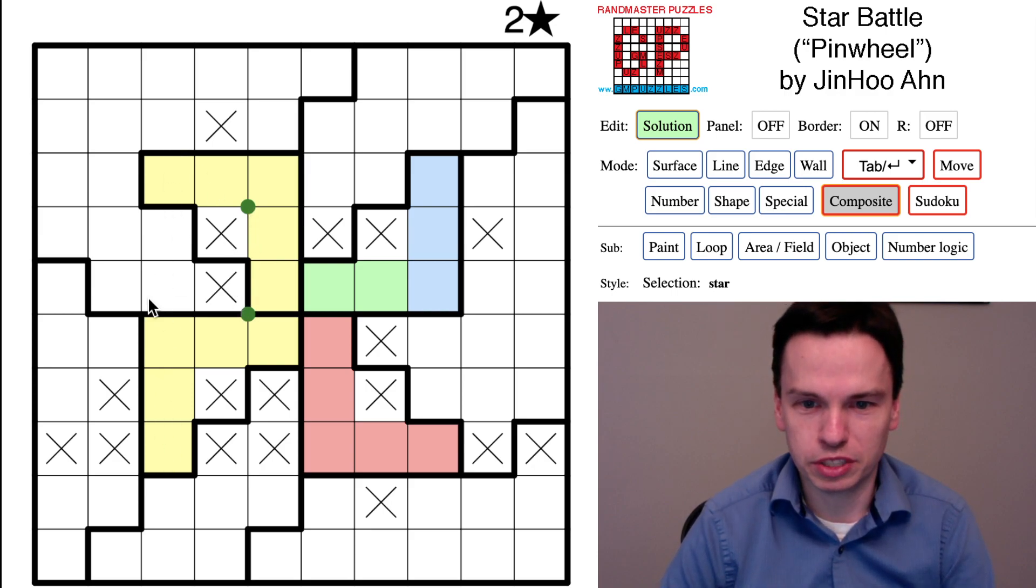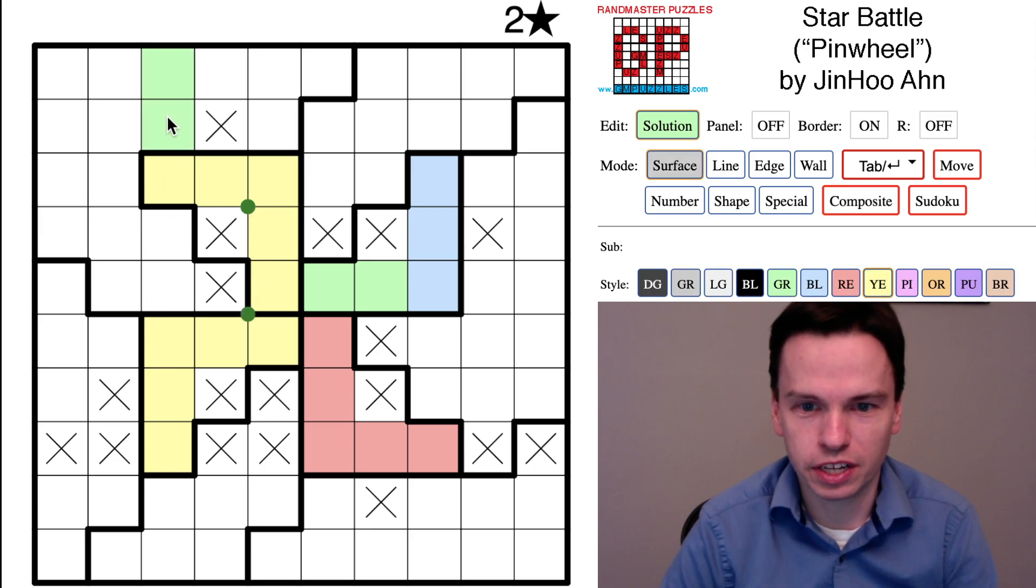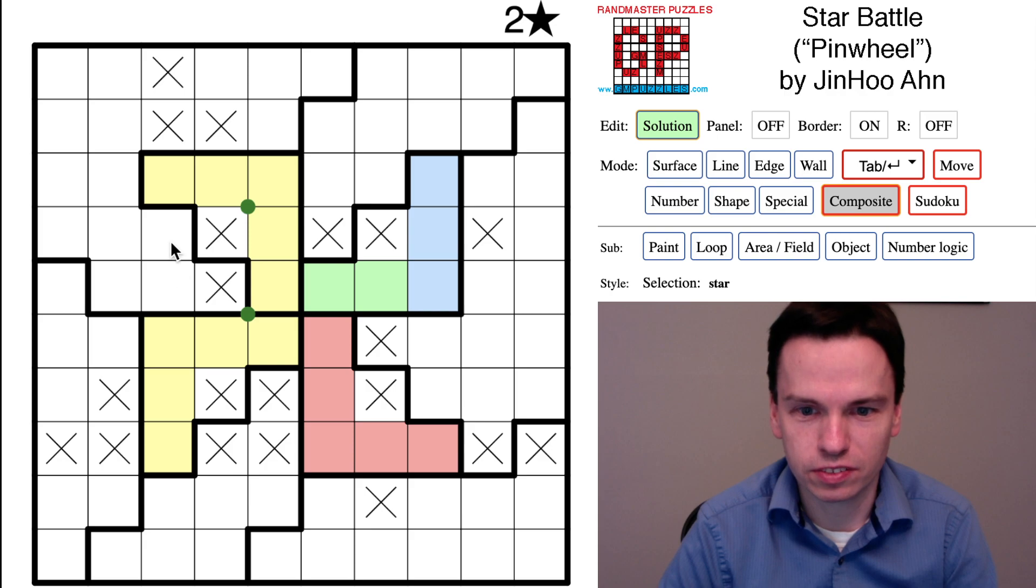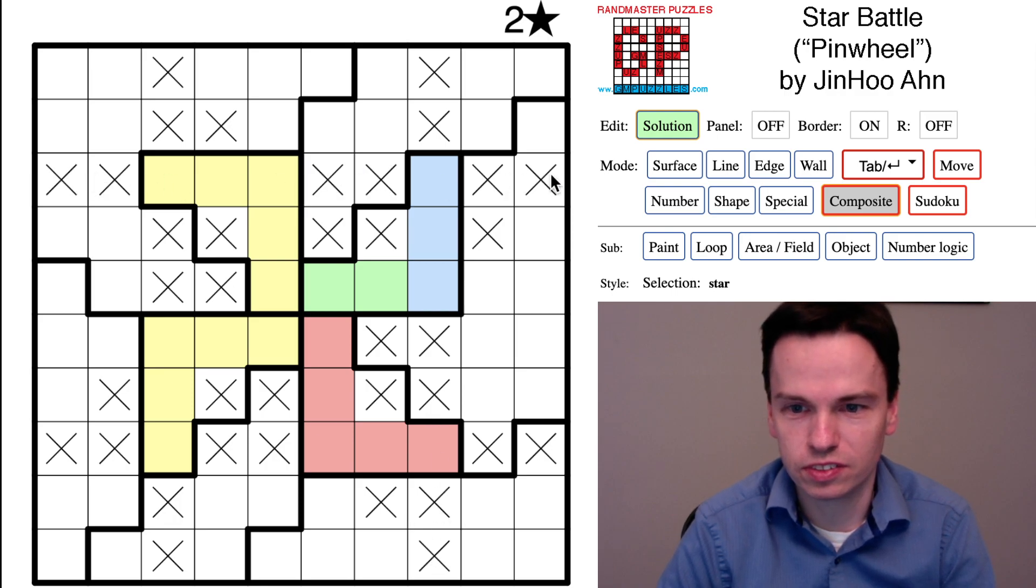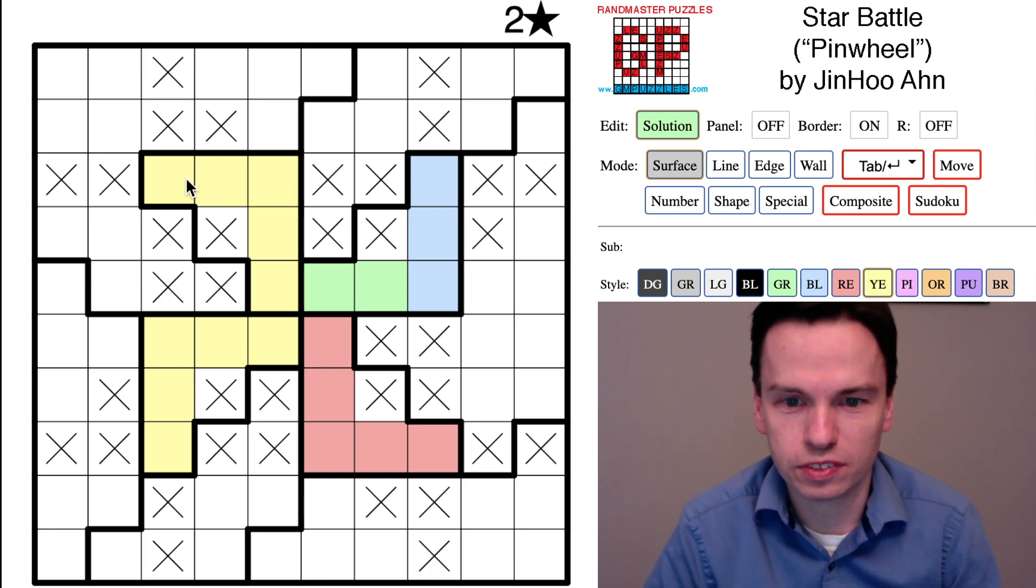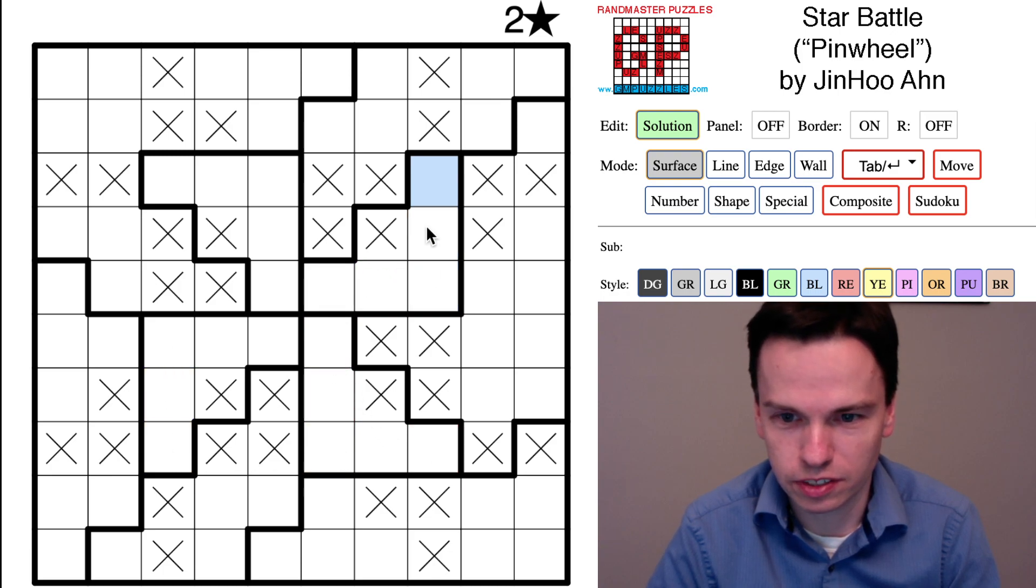We've got two stars that are going to be in this third column and we can't have another star in any of these green cells. So I'm going to come back and cancel these in the eighth column for similar reasons, and cancel these in the third row for similar reasons. And then I'm just going to go ahead and clear the coloring from the grid because we're not going to use colors right now.